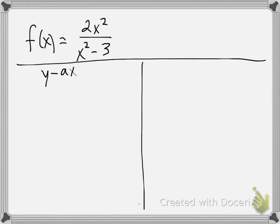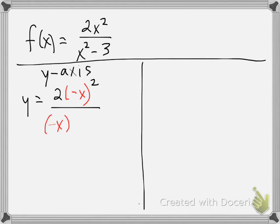To test for y-axis symmetry, I'm going to plug in negative x where I see an x. So I'm changing my sign on x, giving me 2 times negative x squared divided by negative x squared minus 3. What happens with the square? Squaring a negative number makes the negative go away — the square absorbs the negative — so we get y equals 2x squared over x squared minus 3.